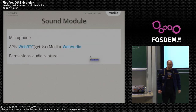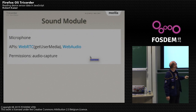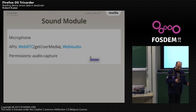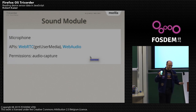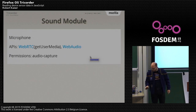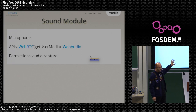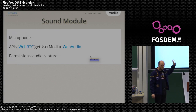The next one is probably the most complicated example — the sound module. It looks pretty innocent: the microphone. Getting the microphone is easy, but what I'm doing is displaying graphically an analysis of the data I get from the microphone — that's not so easy. For getting the microphone itself, you're using WebRTC, specifically the getUserMedia piece. For analyzing, I'm using WebAudio, which is a pretty new standard but extremely powerful. The permission you need is audio-capture for the WebRTC getUserMedia part to fetch audio data from the microphone.